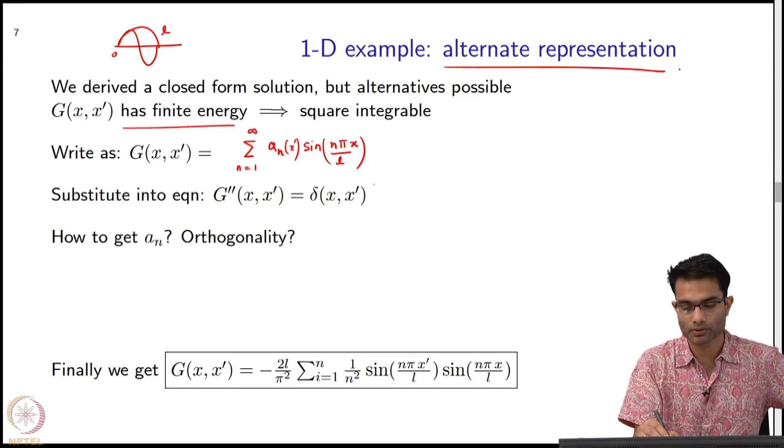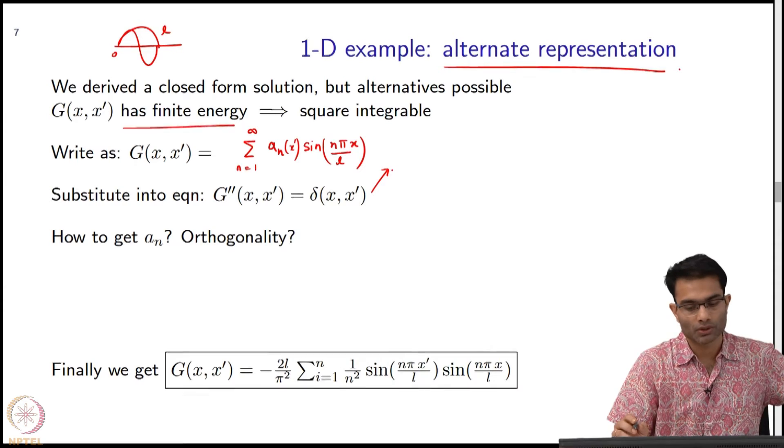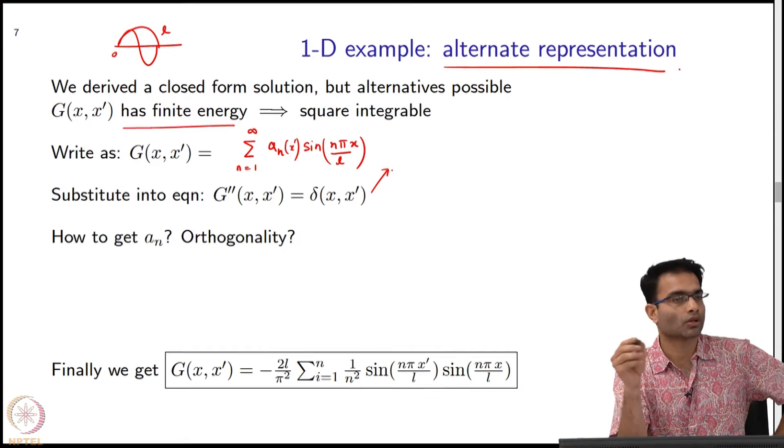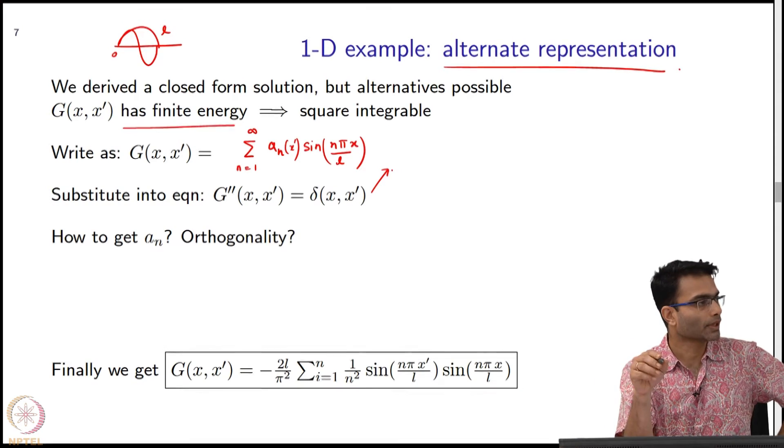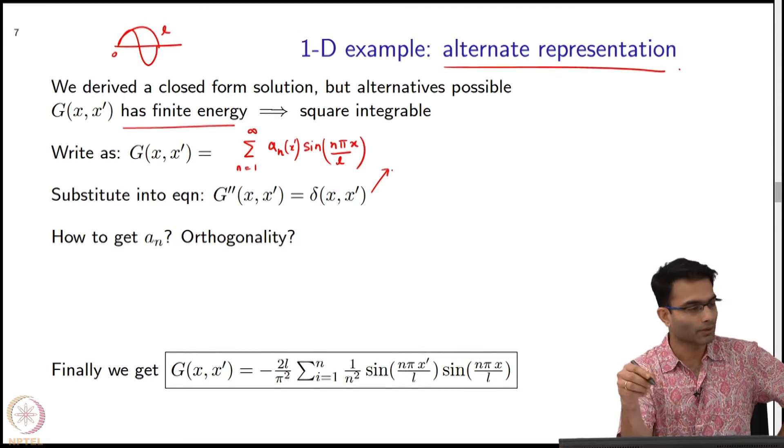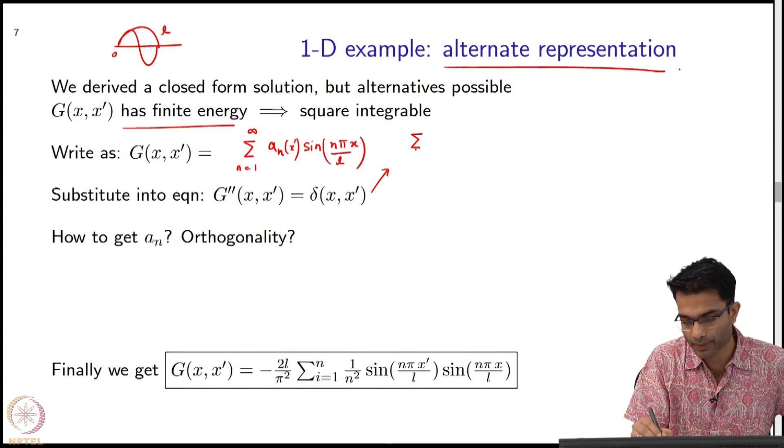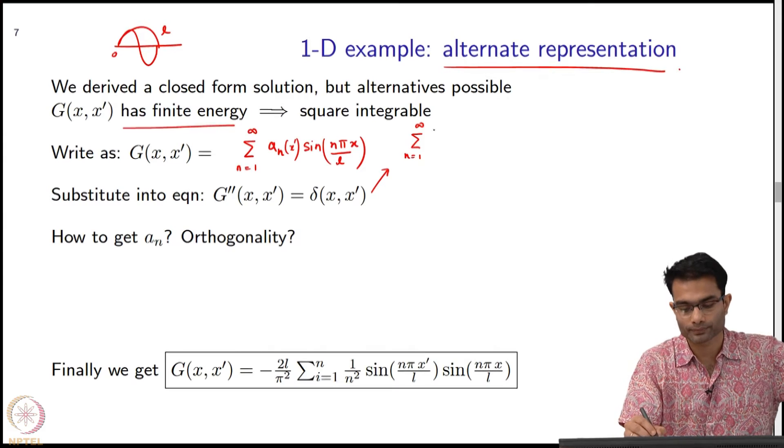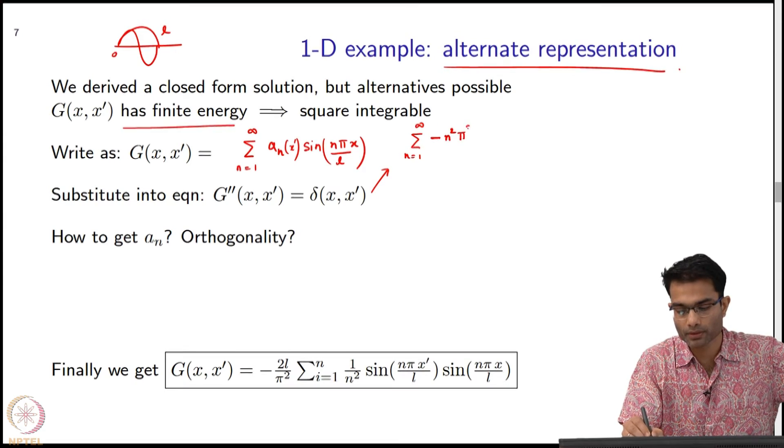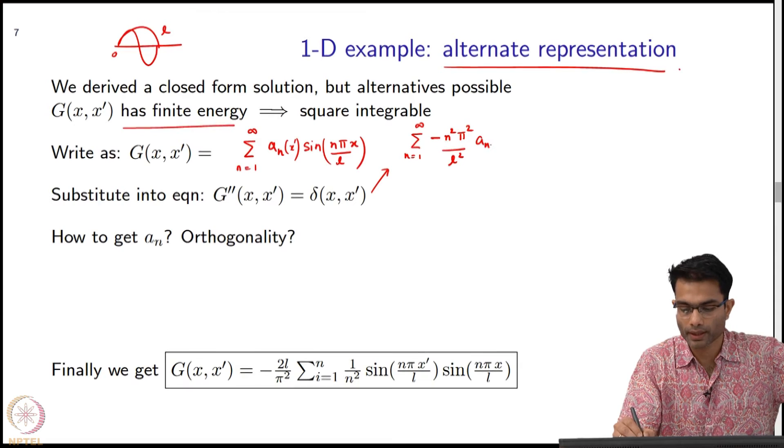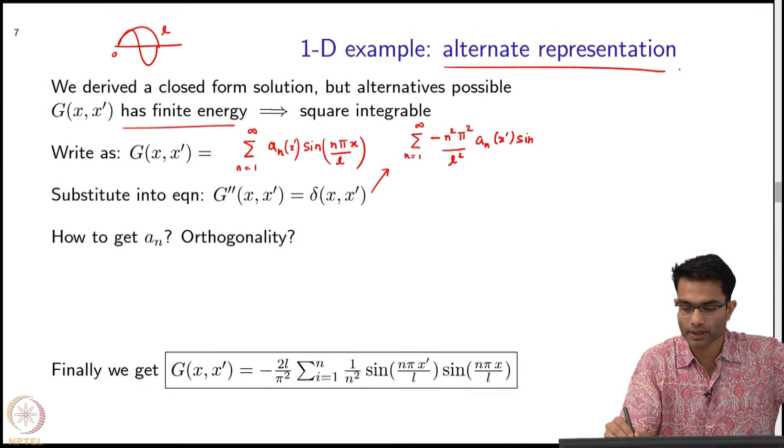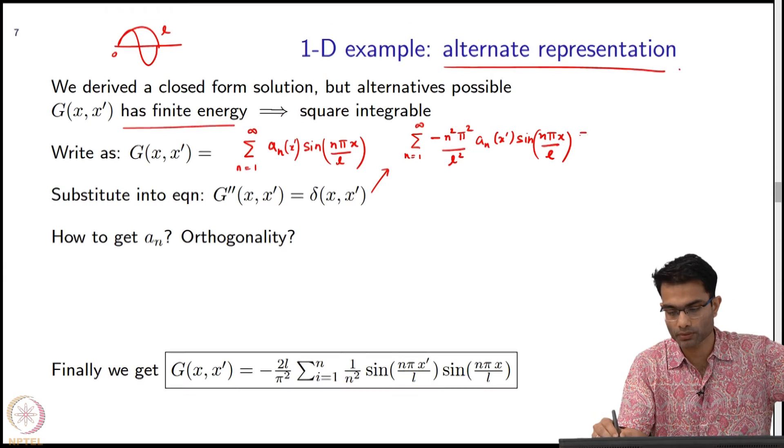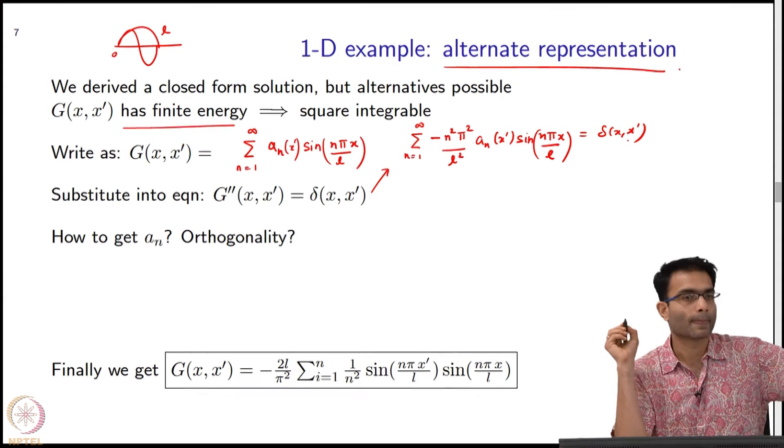The next step is to find out what are these A_n's. I have a differential equation. What can I do? Substitute it. The second derivative—the first derivative of sin gives me cos, one more derivative gives me a sin. The left hand side will become summation n equals 1 to infinity: minus n²π²/L² A_n(x') sin(nπx/L) equals delta of (x - x').